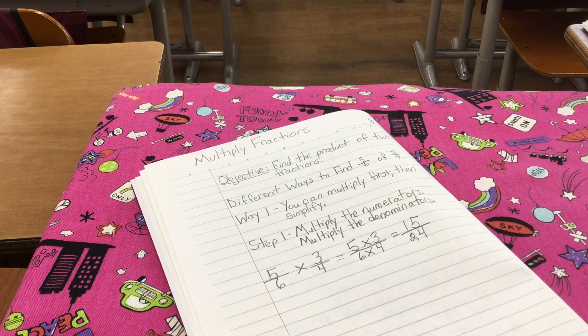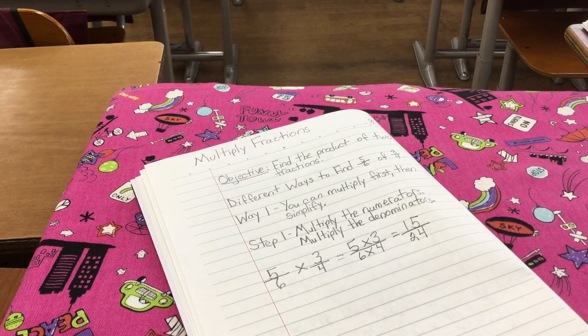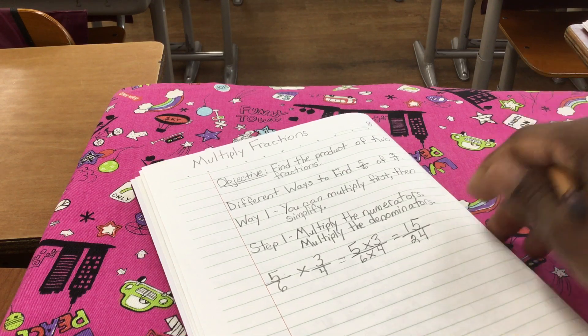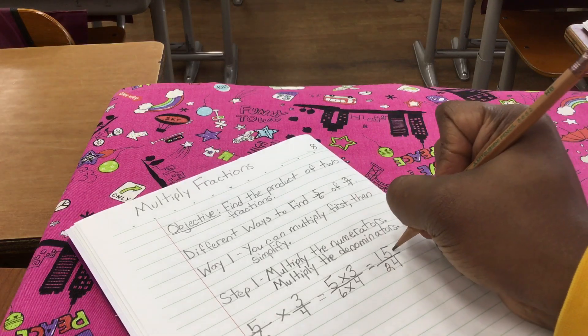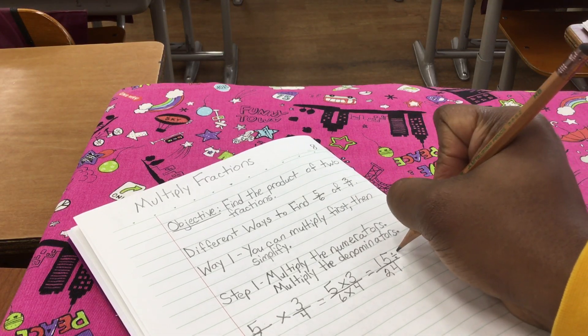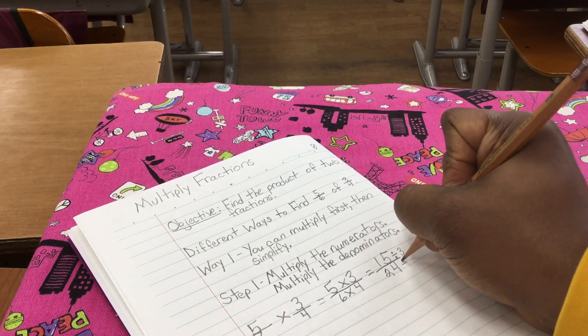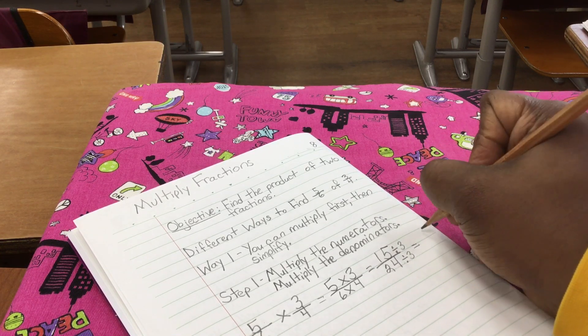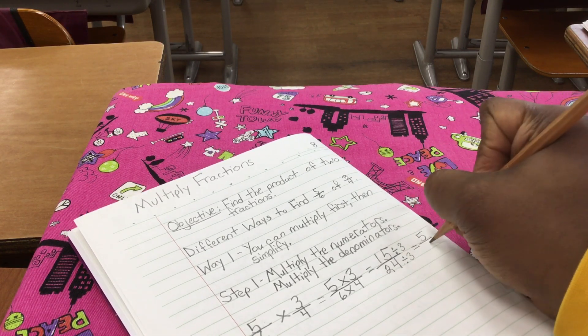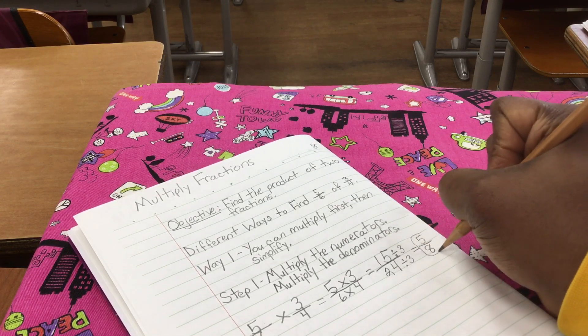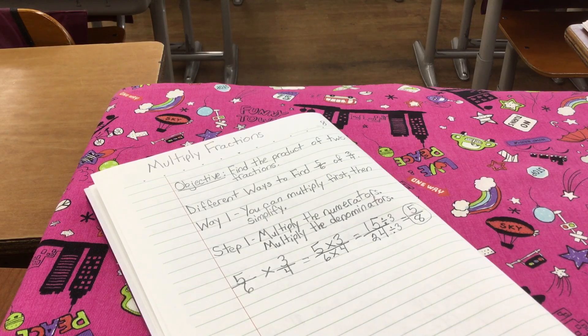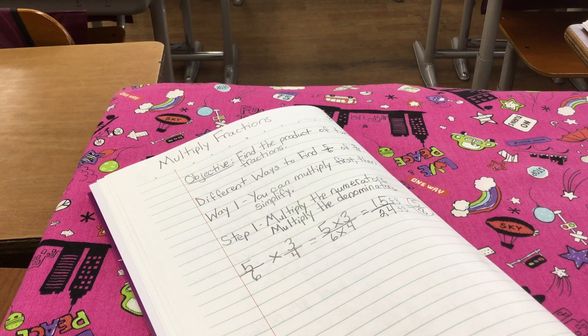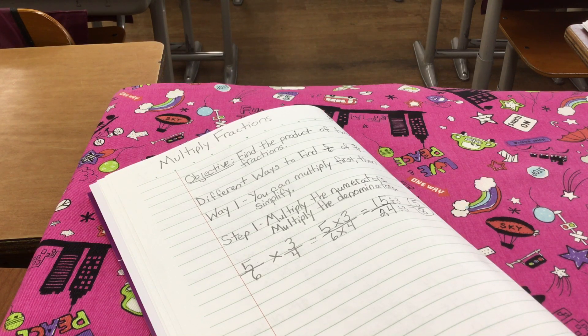Now, we can make that smaller. We can simplify it, right? So we need to find numbers that go into 15 and 24. Well, I know that number is going to be three. So I'm going to now divide 15 divided by three and 24 divided by three. And that is going to give me five-eighths as an answer when I simplify it. That's way one. This is the way that I always use. And I find it to be the easiest.